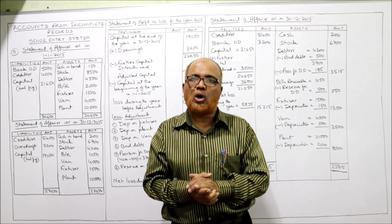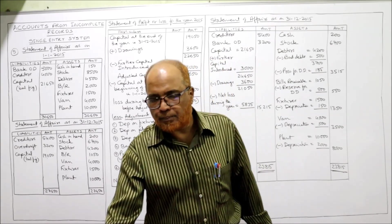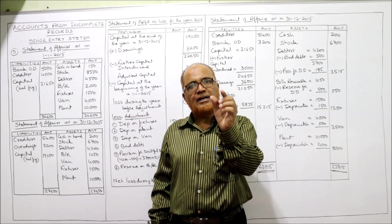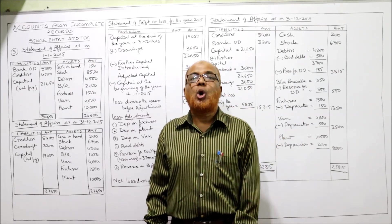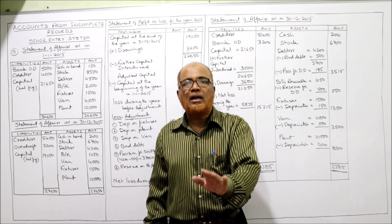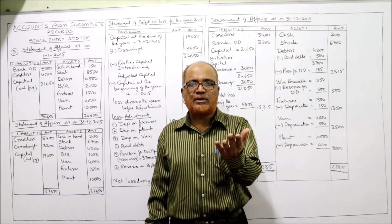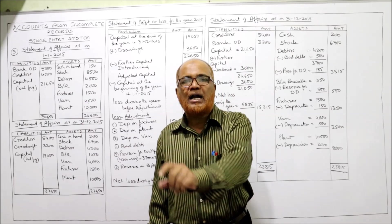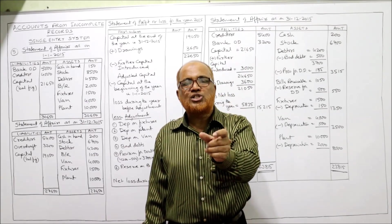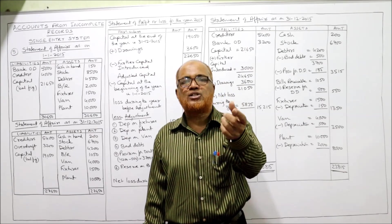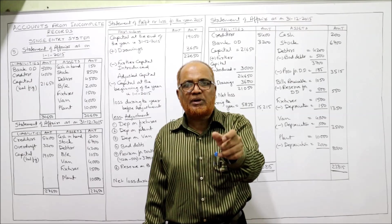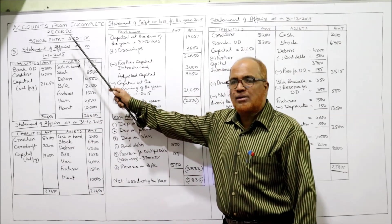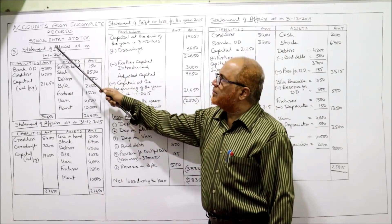After finding out capital, we make a statement of profit or loss. The formula is: take capital at end, add drawings, deduct further capital introduced to get adjusted capital. Then deduct the capital at the beginning to get profit before adjustments. Then we make all adjustments regarding depreciation, bad debts, and provision for bad debts to arrive at final profit or loss.